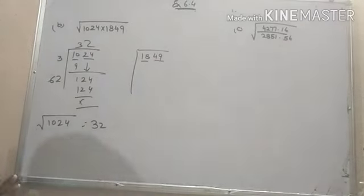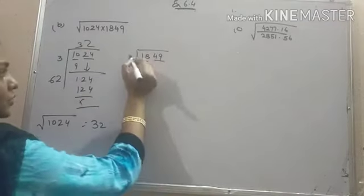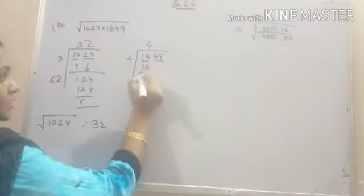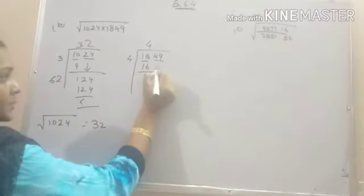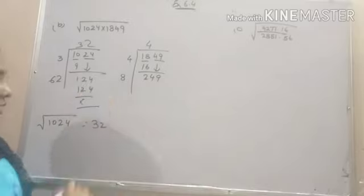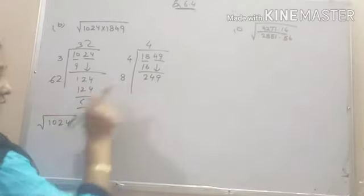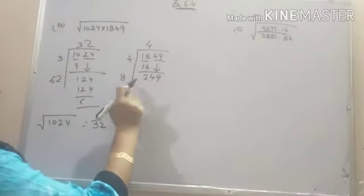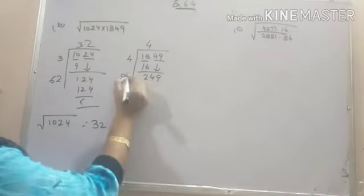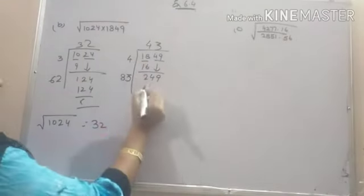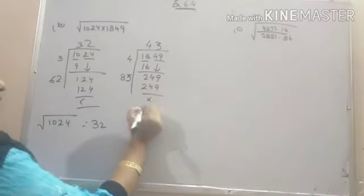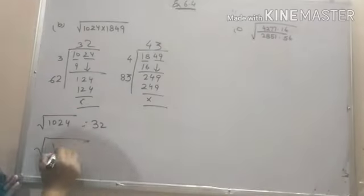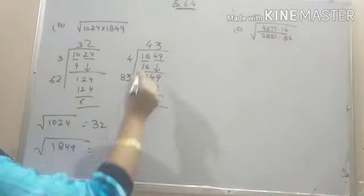Similarly find the root of this number 18, so it will go on 4, 4 times 4 are 16, 2, bring the next pair down, double of 4 is 8. Now you can see here it is 3 and also in the table of 8, 8 times 3 are 24. So it will go on 3. So under the root 1849 is 43.